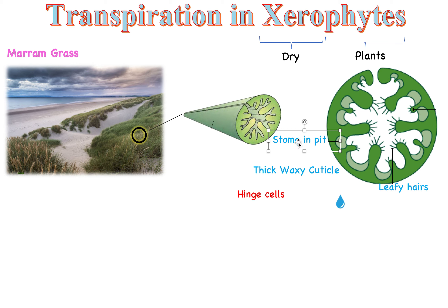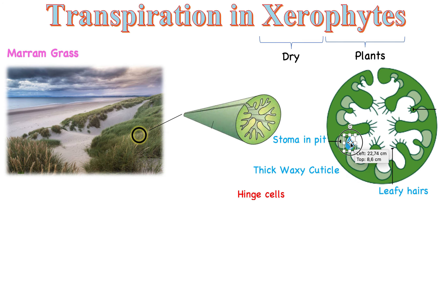The last important feature is leaf hairs. These hairs basically trap water. For example, if sweat or water manages to leave the stoma and enters the internal space, these hairs behave like little barriers. When a water droplet leaves the stoma, it gets trapped — these hairs keep the water inside the plant so it can't leave so easily, making the area more moist and preventing water loss.